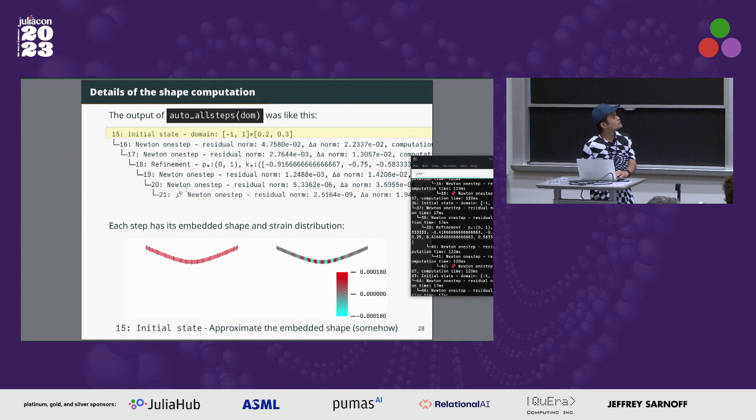Each line represents each step and it corresponds to the embedded shape and strain distribution like this. The next step is Newton-Raphson method. This method relaxes the strain distribution and shape. Newton-Raphson method again, and the next step is refinement. This operation does not change the shape but increases the number of control points. This helps for more accuracy of the embedding. Newton-Raphson method again and again, and finishes the computation of the embedding.